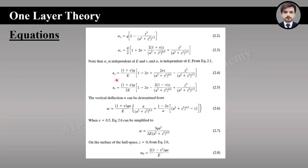Equation 2.4 is used to find the vertical strain. Equation 2.5 is used to find both the radial and tangential strains. The vertical deflection can be determined from equation 2.6.